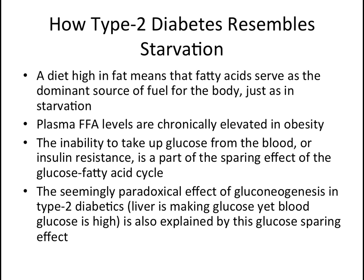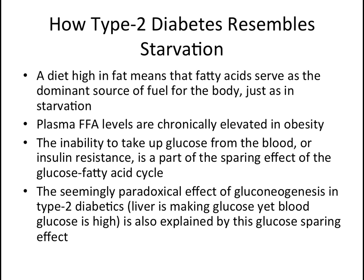Now we can begin to discuss the glucose fatty acid cycle with regards to insulin resistance by examining the similarities between starvation and type 2 diabetes. During starvation, the body's primary source of fuel is fat. A high-fat diet, or the Western diet, also means that fat serves as a dominant source of fuel, so fatty acid oxidation prevails and glucose oxidation is suppressed. The inability to take up glucose from the blood — insulin resistance — is a part of the sparing effect of the glucose fatty acid cycle. Essentially, a high-fat diet mimics starvation.